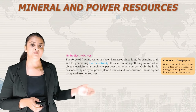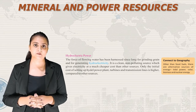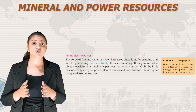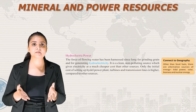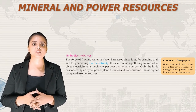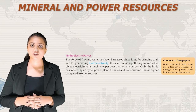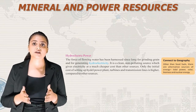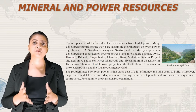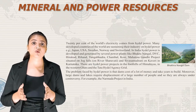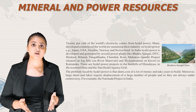Now let's talk about hydroelectric power. The force of flowing water has been harnessed for generating hydroelectricity. It is a clean, non-polluting source that gives electricity at a much cheaper cost than other resources. Only the initial cost of setting up hydropower plants, turbines and transmission lines is higher. Other than fossil fuels, alternative sources of energy include tidal power, solar, biomass and nuclear energy. About 20% of the world's electricity comes from hydropower. Many developed countries sustain their industry on hydropower — for example, Japan, USA, Sweden, Norway and Switzerland.